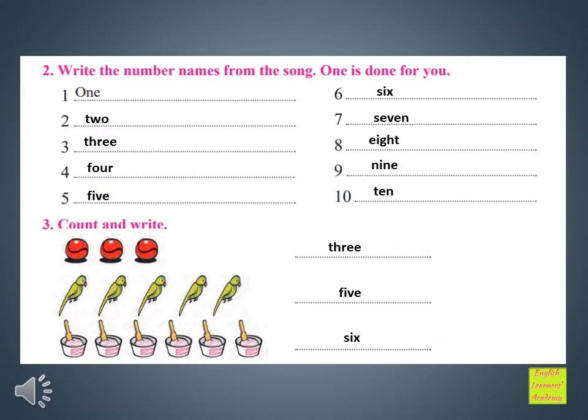Write the number names from the song — 1 is done for you. 1: O-N-E. 2: T-W-O. 3: T-H-R-E-E. 4: F-O-U-R. 5: F-I-V-E. 6: S-I-X.